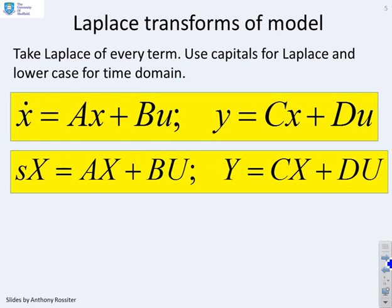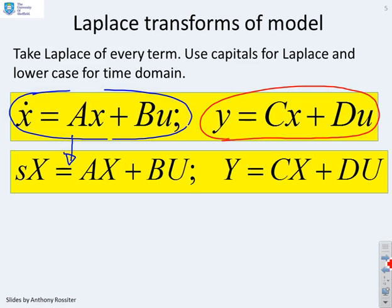Taking Laplace then of this first equation x dot equals Ax plus Bu, you end up with this: x dot becomes sX, Ax becomes AX, and Bu becomes BU. Similarly, if you take Laplace of the output equation, in essence all we're doing is replacing the lowercase by the uppercase, so we've got the same equation.